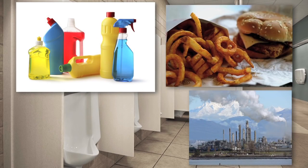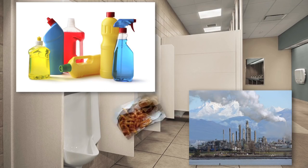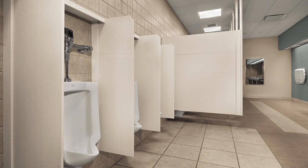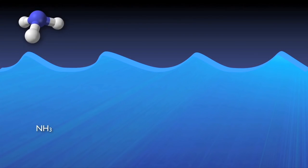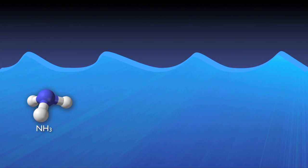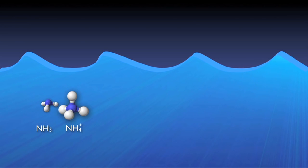In simplistic terms, nitrogen in various forms is flushed, rinsed, or otherwise introduced into the sewer system. Almost all of this organic nitrogen — urea, for example — is immediately hydrolyzed into ammonia. In water, gaseous ammonia (NH3) is almost entirely converted to ionized ammonia, or ammonium (NH4+).